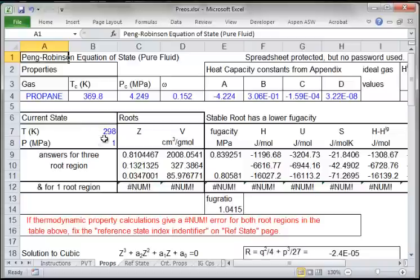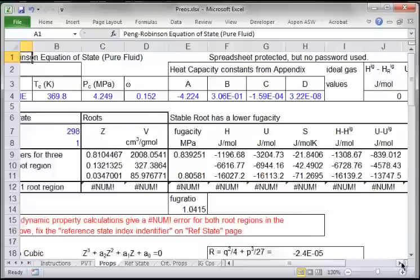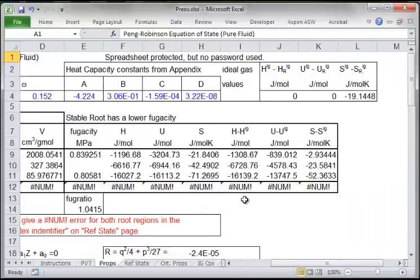Then I have the current state, and the rows you've seen before, but now I've added columns for the thermodynamic properties. And over further to the right, I have the departures at the given state on this sheet.